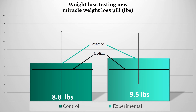The average is calculated by taking all the weight loss values and dividing by the total number of people. There's another important statistic called the median — that's the halfway point. The median means half the people lost this much weight or more, and half lost this much weight or less. In our control group, the median is about 7.8 pounds, meaning 50 people lost more than 7.8 pounds and 50 people lost less than 7.8 pounds.